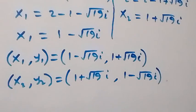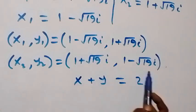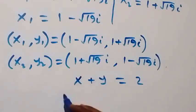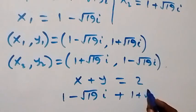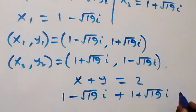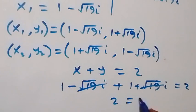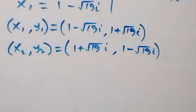Let's check if these solutions satisfy the given equations. From equation 1, x plus y equals to 2. Using the first solution: (1 minus root 19 i) plus (1 plus root 19 i). The minus root 19 i and plus root 19 i cancel out, giving 1 plus 1 equals 2. Left hand side equals right hand side, so it satisfies equation 1.